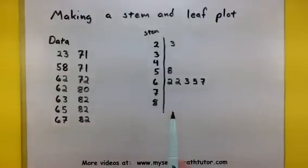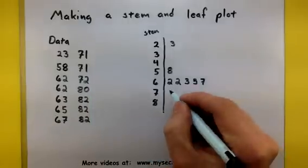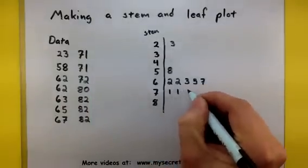All right, we're on a roll. So let's finish off these 70's. I've got a 71, 71, and a 72. So 1, 1, and 2.